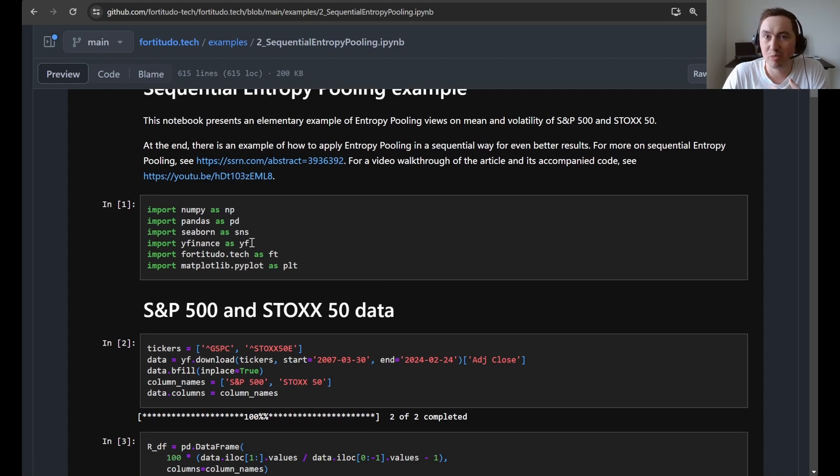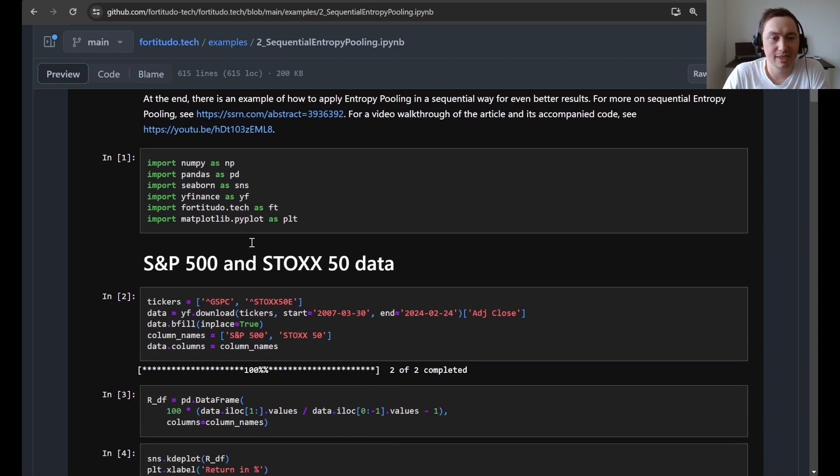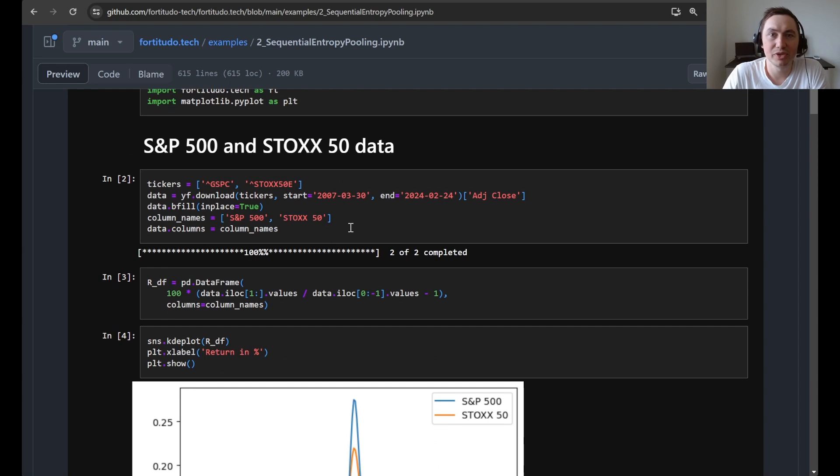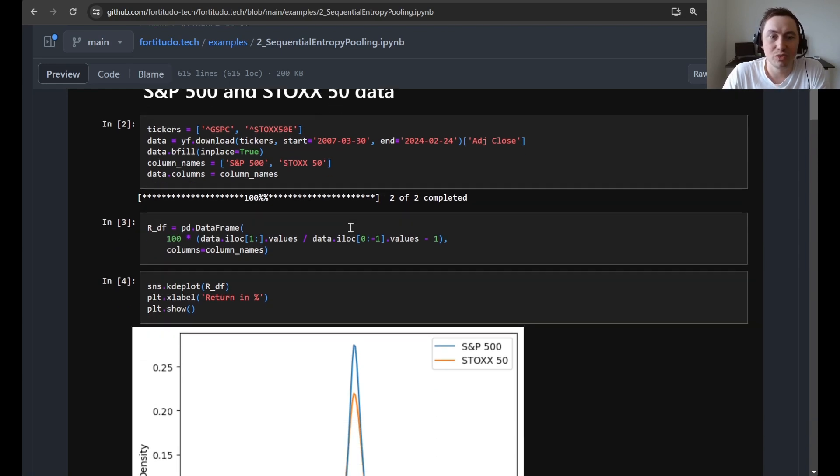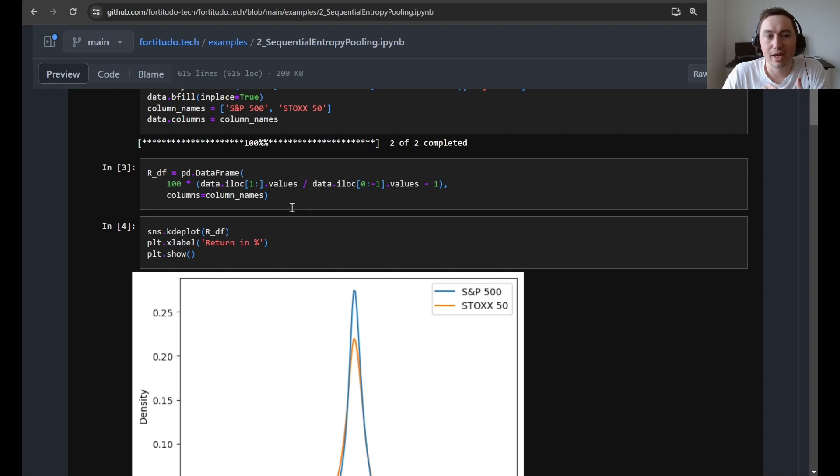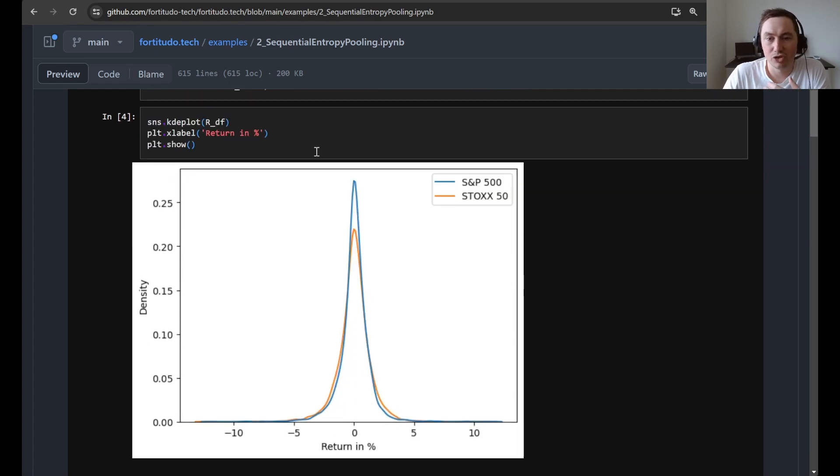So first we just import the packages that we need and then you can see here that we use Yahoo Finance to get daily data for these two equity indices. We compute the daily returns and scale them by 100 so we have them in percent and then we show you a kernel density estimate of the historical distributions.